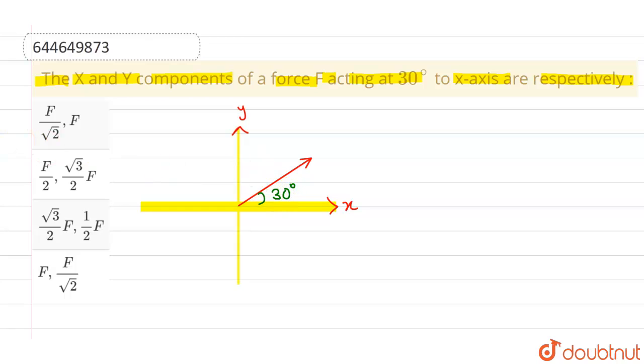So we have to find out x and y components. Now, we know that this particular vector can be resolved into two components, one which is along x-axis and another which is along y-axis.